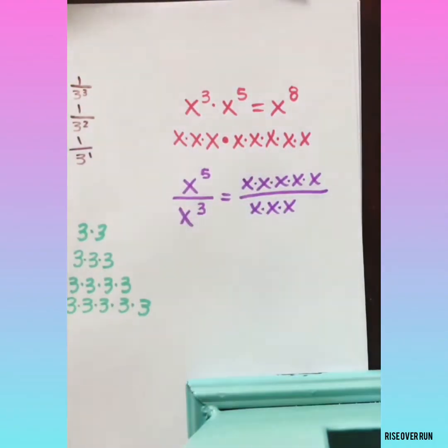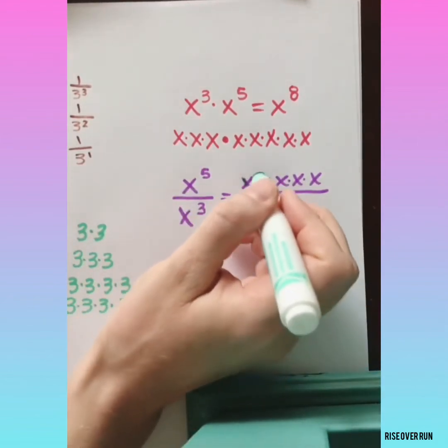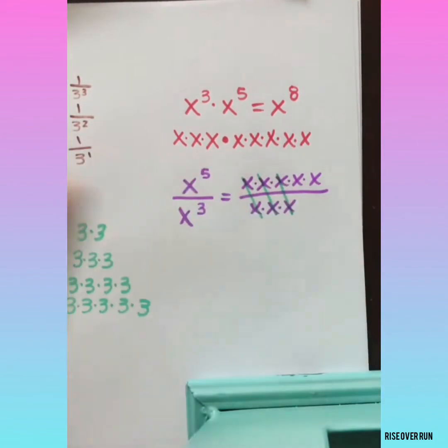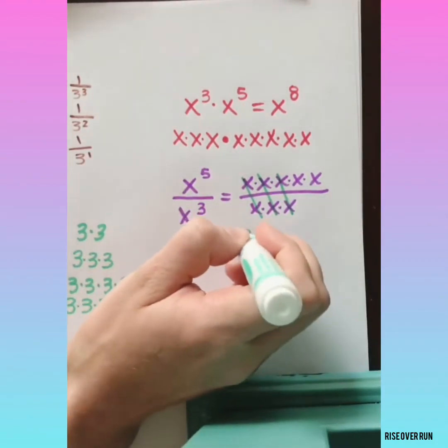Now since we're dividing, we can do some canceling here because everything is multiplying. We can cancel anything that's in the numerator and in the denominator. That leaves us with x squared.